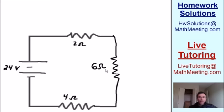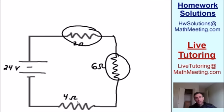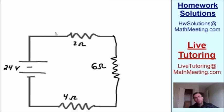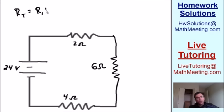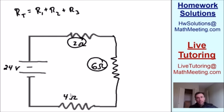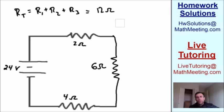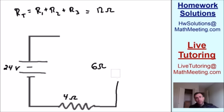We're almost done simplifying. The only thing left is to combine the three remaining resistors that are in series. The total resistance is R1 + R2 + R3: 2 + 6 + 4 = 12 ohms. We replace all three with one equivalent resistor of 12 ohms.